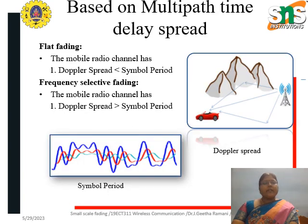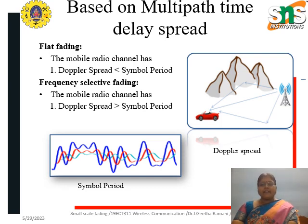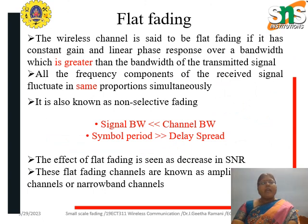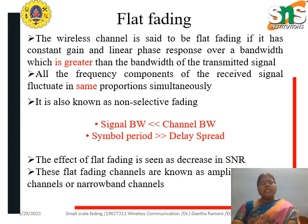Another point about flat fading is that in this case the mobile radio channel has a Doppler spread which is less than the symbol period, whereas in frequency selective fading the Doppler spread is greater than the symbol period, which affects the signal characteristics. The wireless channel is said to be flat fading if it has a constant gain and a linear phase response over a bandwidth greater than the bandwidth of the transmitted signal.